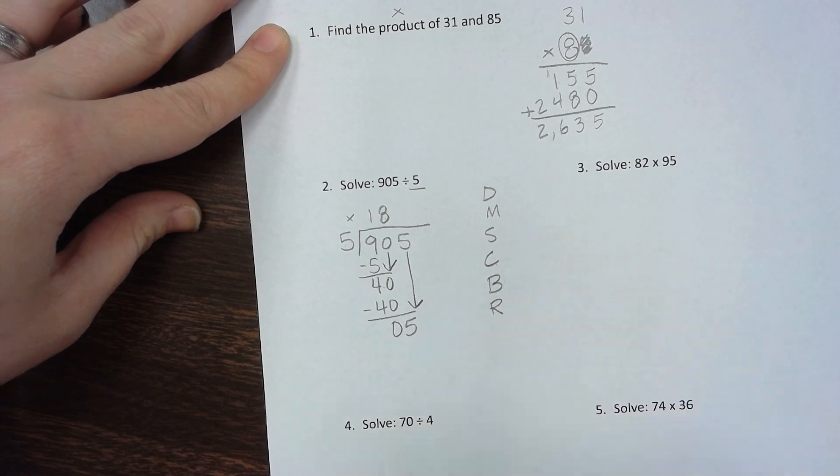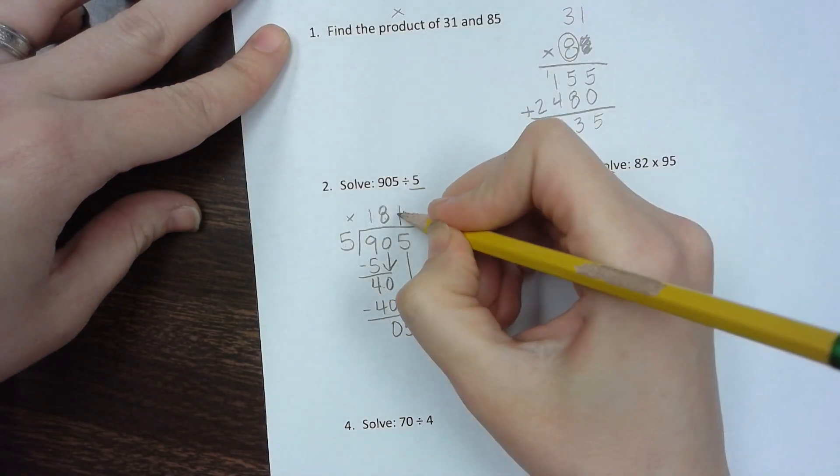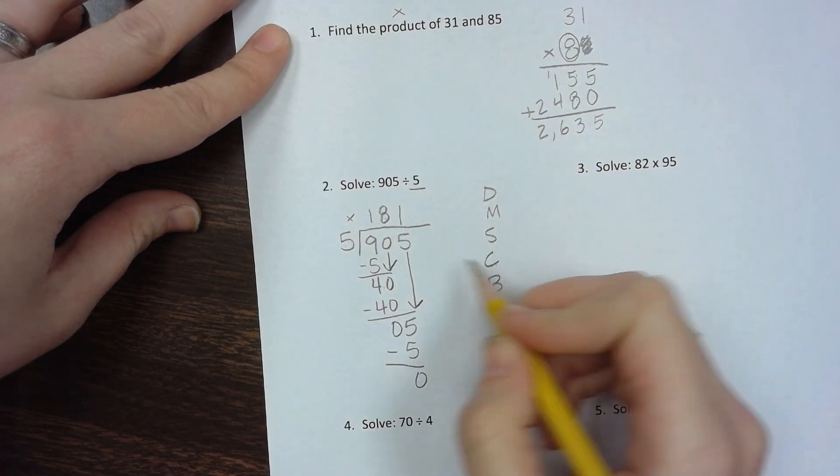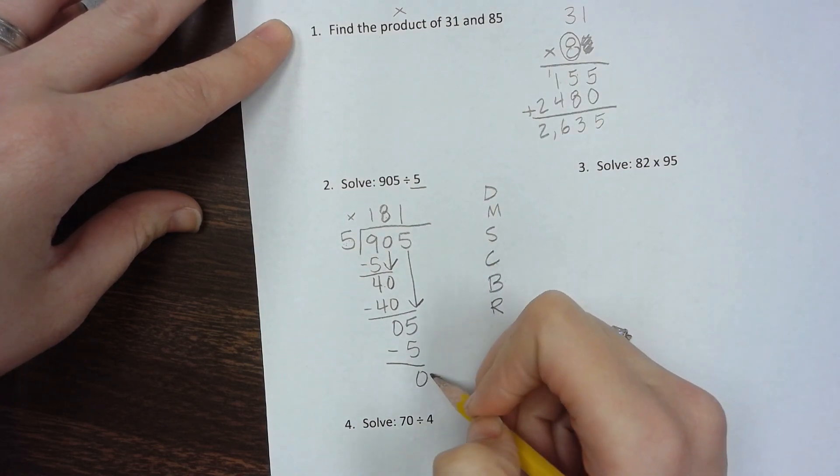Repeat one more time: 5 goes into 5 once. 1 times 5 is 5. Subtract and get 0. Nothing else to bring down. There's no remainder, so the final answer is 181.